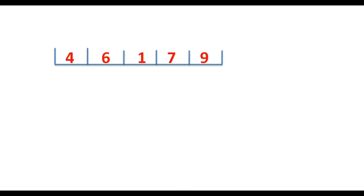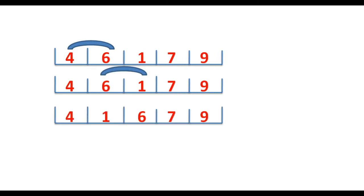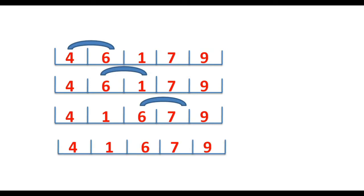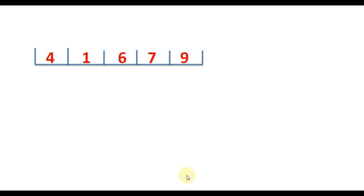In the second round, we start from index 0. We compare 4 and 6 — they are in position, so no swapping. Then we compare 6 and 1 — since 1 is less than 6, we swap the elements. Next we compare 6 and 7 — they are in place, no swapping. Then 7 and 9 — also in place, no swapping. We have reached the end of the array, but the array is still not completely sorted.